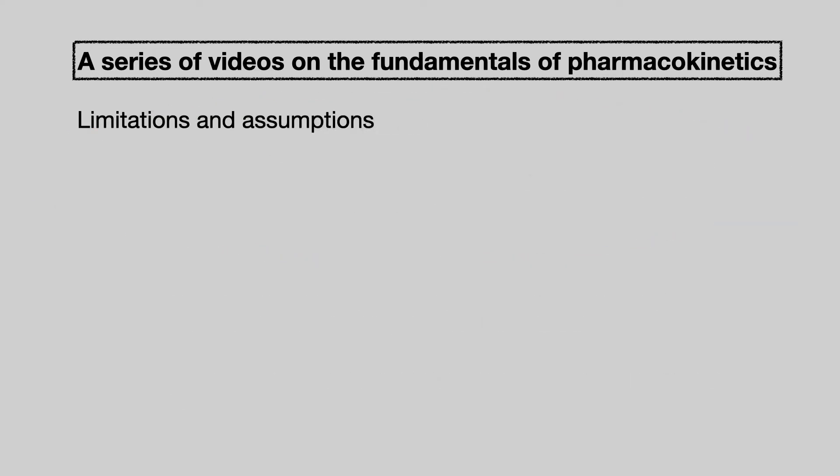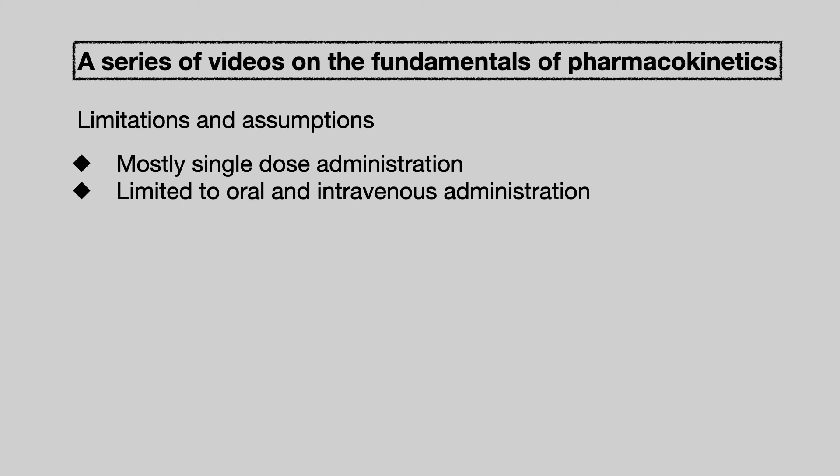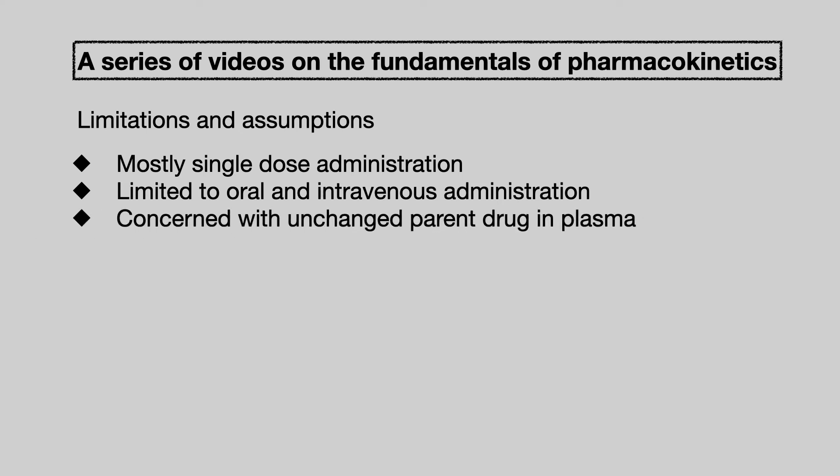There are, of course, limitations and assumptions made in both the textbook and the videos. We are dealing mostly with single-dose administration — there is a little bit on repeat dose, but the focus is on single dosages. We are limited to oral and intravenous routes of administration. We are concerned here only with unchanged parent drug in plasma; we do not look at metabolites and we do not look at any other body compartment. Throughout, we assume first-order linear kinetics, and if you are not sure what first-order kinetics are, it is explained in video 3A.